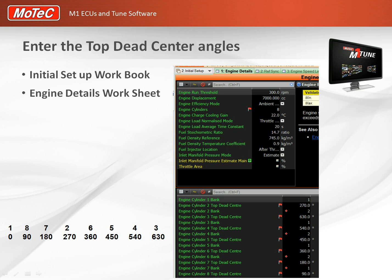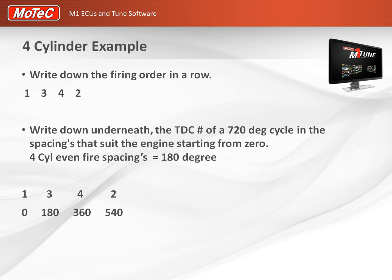Here are some four-cylinder examples. A very common four-cylinder firing order is 1, 3, 4, 2. Write that down, then write down the four-cylinder firing spacings which are every 180 degrees, and you can work out the numbers to enter into that initial setup workbook worksheet.